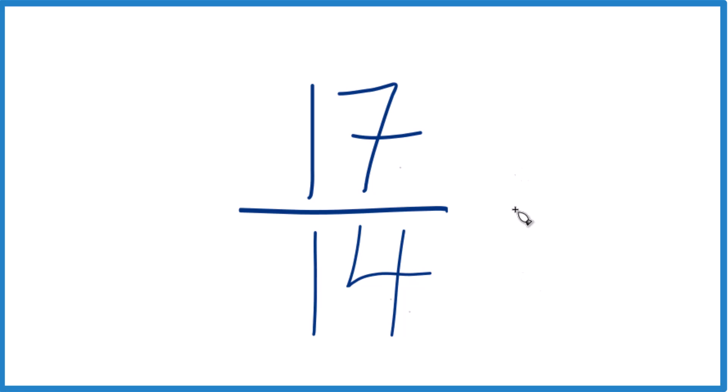And if we divide 17 by 1 and 14 by 1, that common factor, we get 17 fourteenths. So this is already simplified. We can't reduce this or simplify it any further.